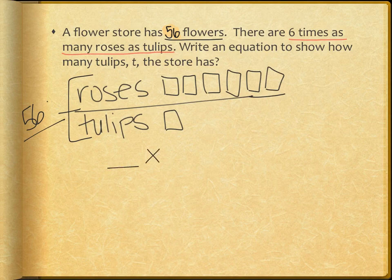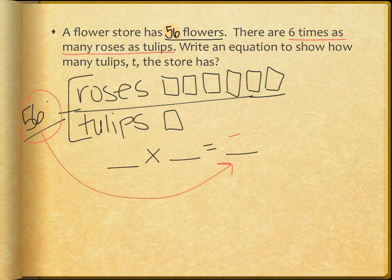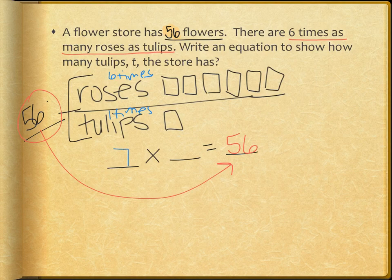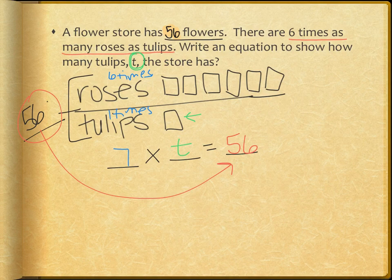It's a multiplication comparison, so something times something equals something. The product is the easy one to find — it's my total, 56. My first factor comes from my model. Six times as many roses and one times as many tulips gives me my first factor, which is seven. Seven times something is 56. That something is what I'm missing, and in this case, that something will tell me the tulips, t. So seven times t equals 56 is the equation for this problem.